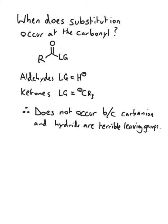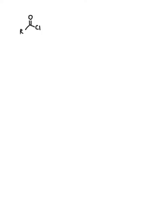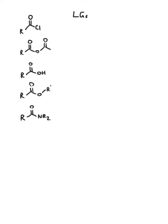Now let's look at other carbonyl species. We have acid chlorides, acid anhydrides, carboxylic acids, esters, and amides. The corresponding leaving groups are a chloride, a carboxylate, a hydroxide, an alkoxide, and an amide anion.